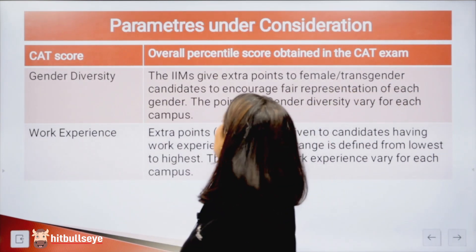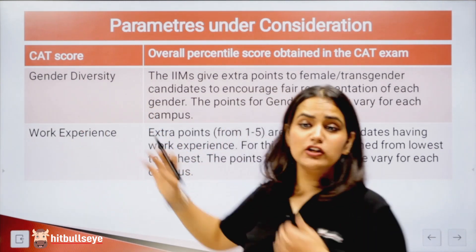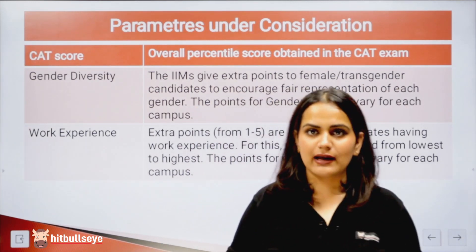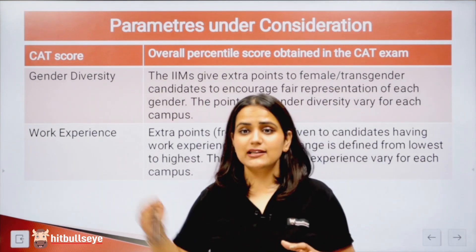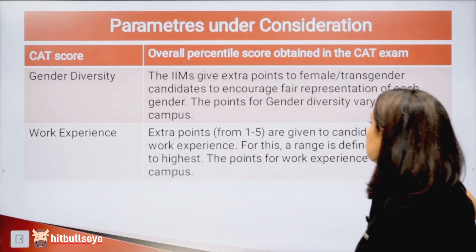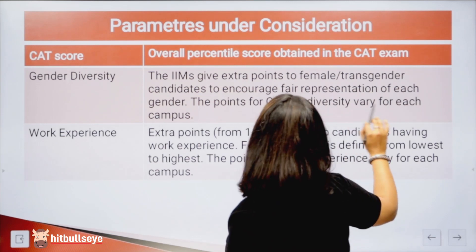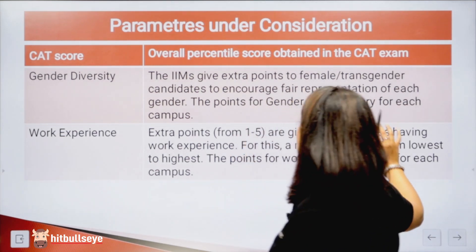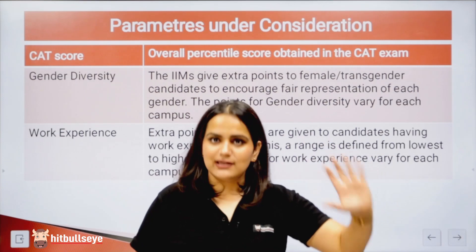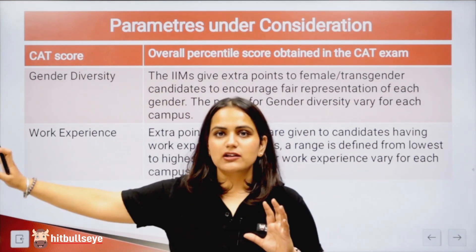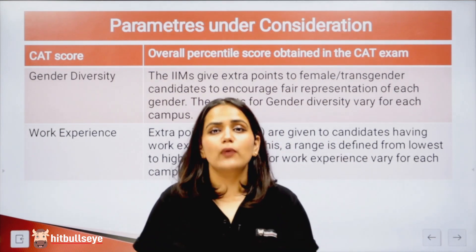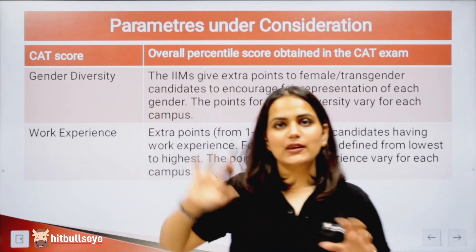The next parameter is gender diversity. There may be certain seats reserved for different categories of candidates. IIMs give extra points to female or transgender candidates to encourage fair representation of each gender. These points for gender diversity vary from campus to campus — this may differ between IIM Ahmedabad and any other IIM, and you cannot question them. It varies from campus to campus.